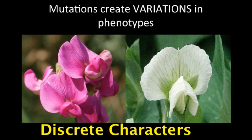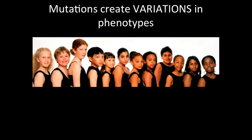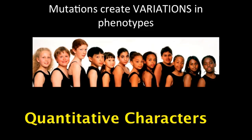For example, in pea plants, one set of alleles is responsible for either purple or white flowers. Genetic variation can also be present in multiple alleles — two or more sets. These are called quantitative factors. An example of this is the many alleles responsible for human skin color.